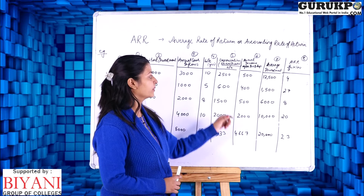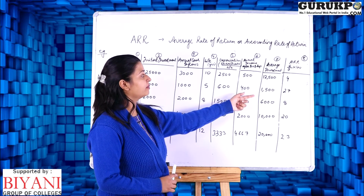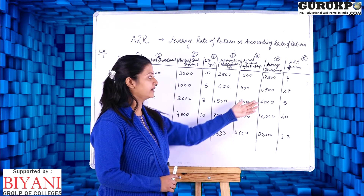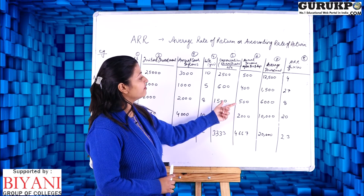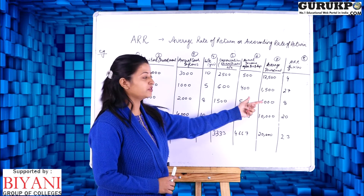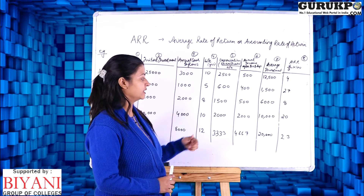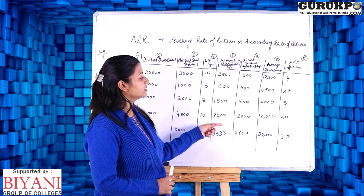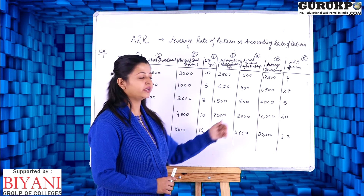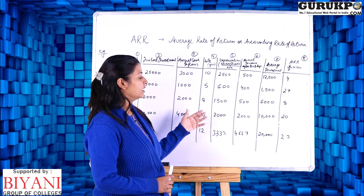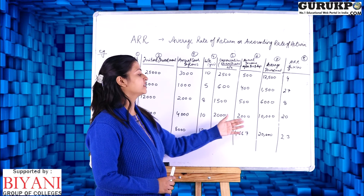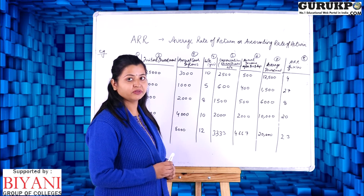Project A: 500 divided by 12,500 into 100 = 4%. Project B: 400 divided by 1,500 into 100 = 27%. Project C: 500 divided by 6,000 into 100 = 8%. Project D: 2,000 divided by 10,000 into 100 = 20%. Project E: 4,667 divided by 20,000 into 100 = 23%.